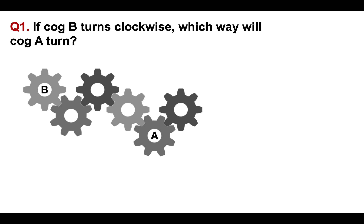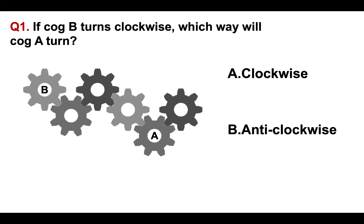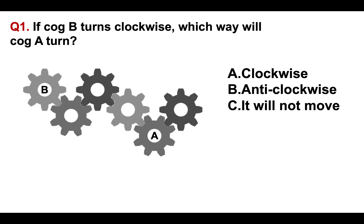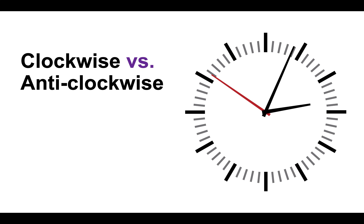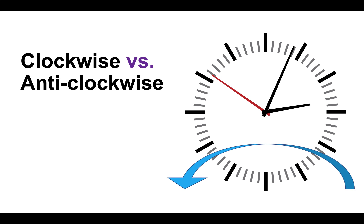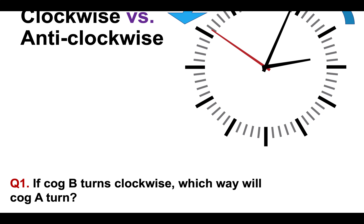Question number one. If COG B turns clockwise, which way will COG A turn? Is it A clockwise, B anti-clockwise, or C it will not move? COG B is turning clockwise — that's all we know. Clockwise is the direction the hands on a clock face would normally travel, and counterclockwise or anti-clockwise is the alternative direction.